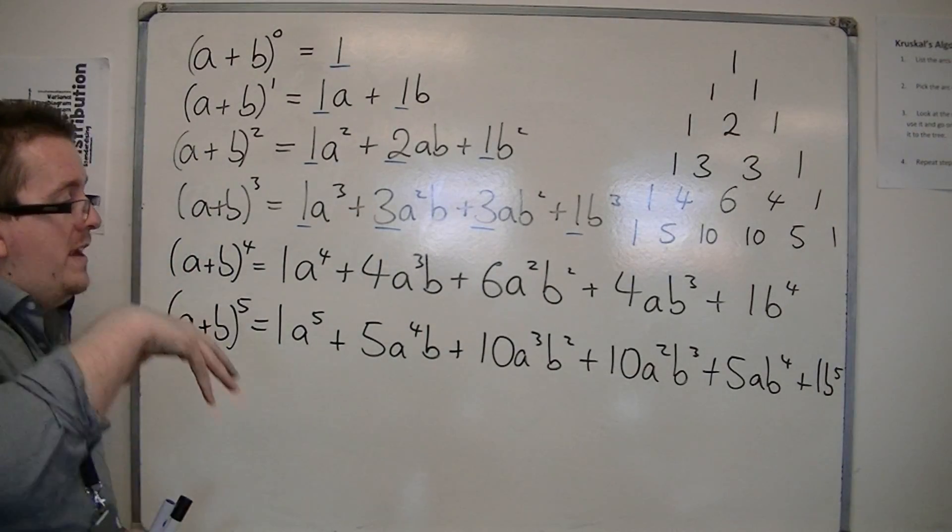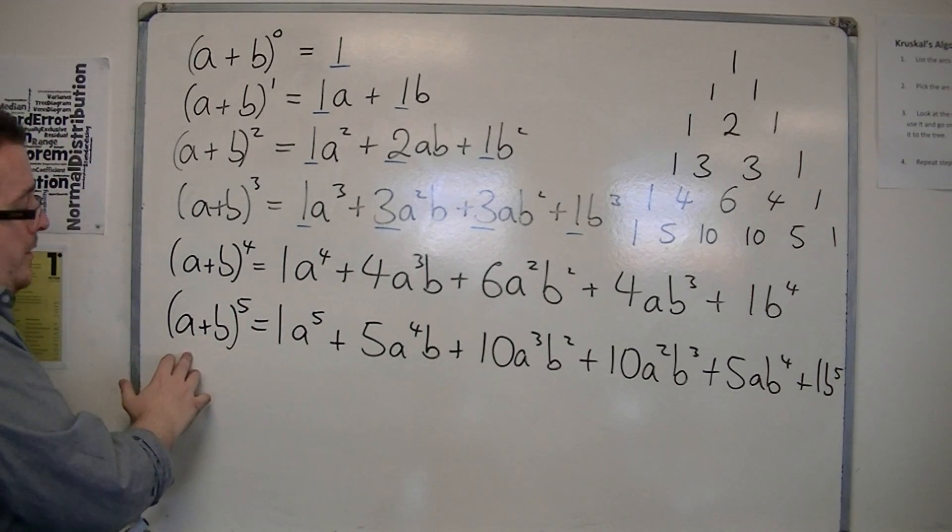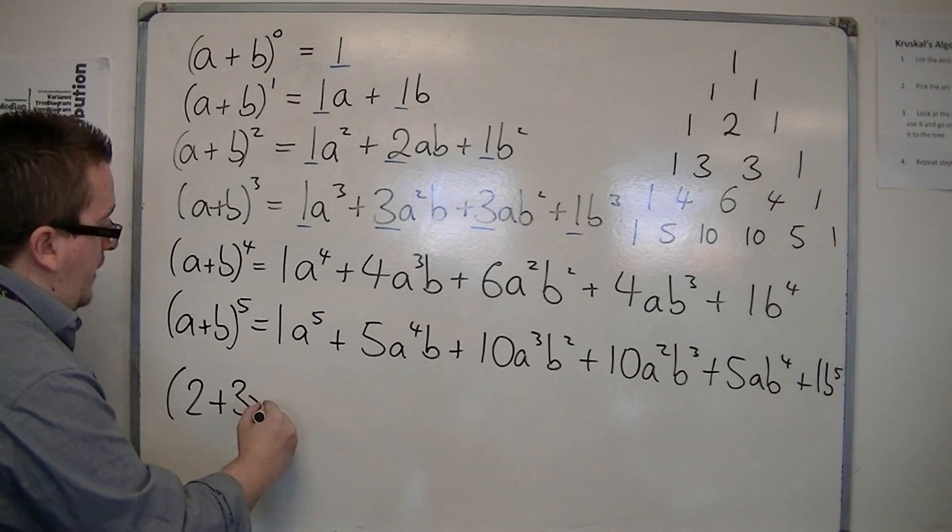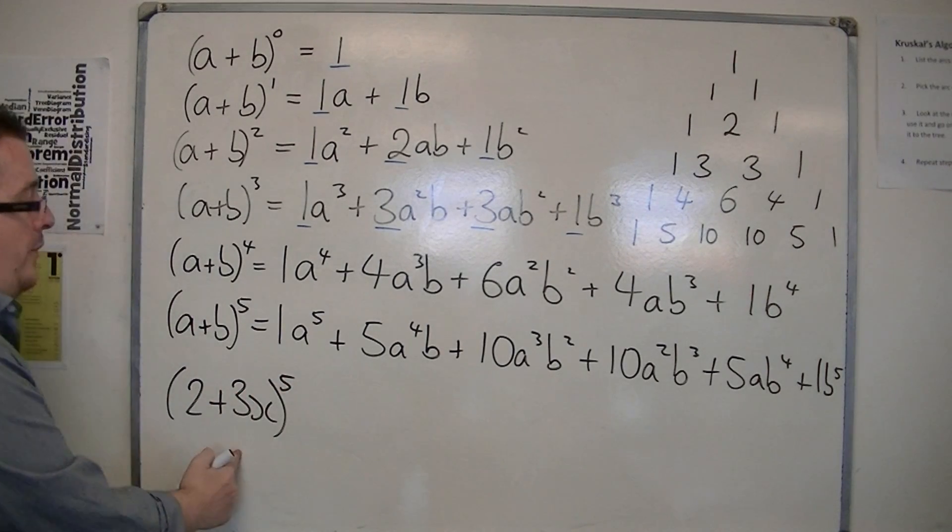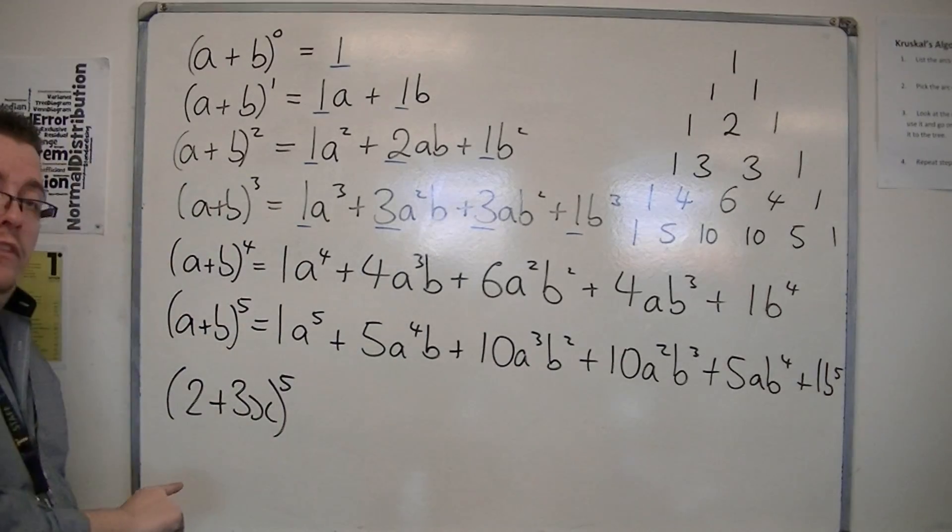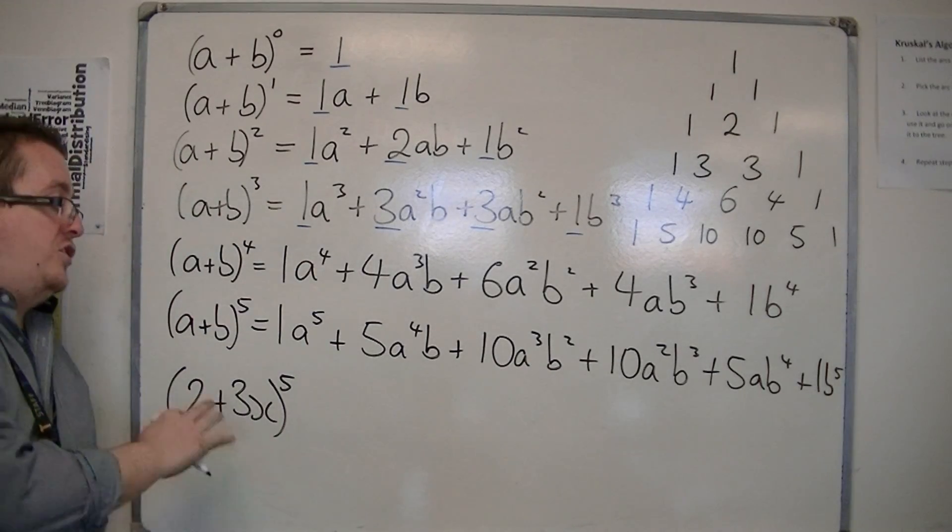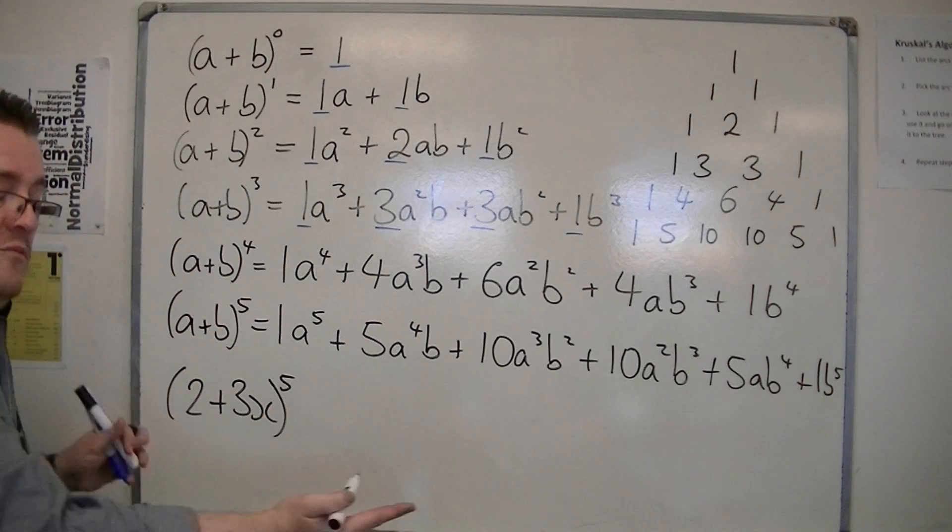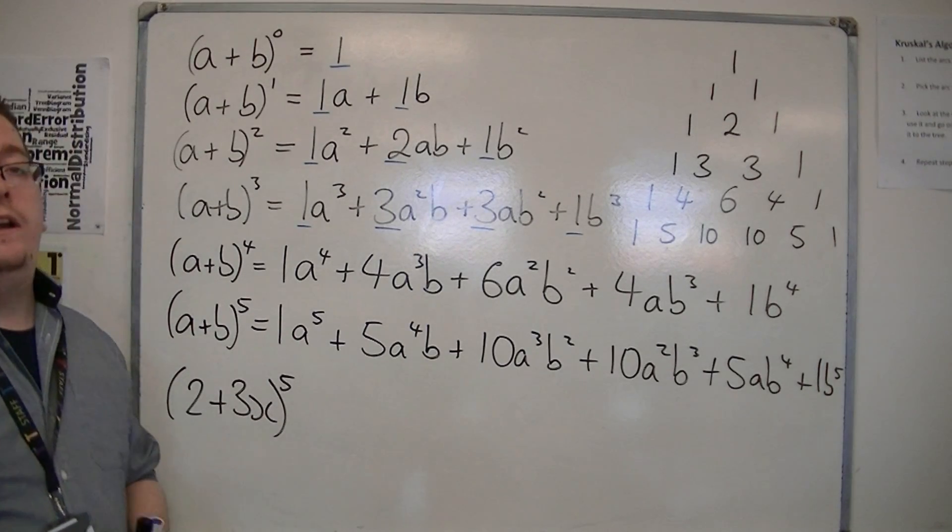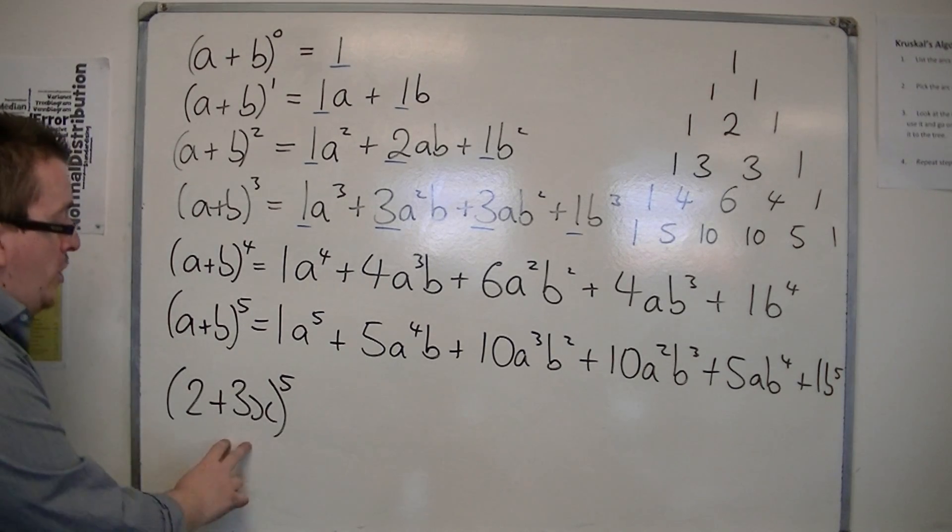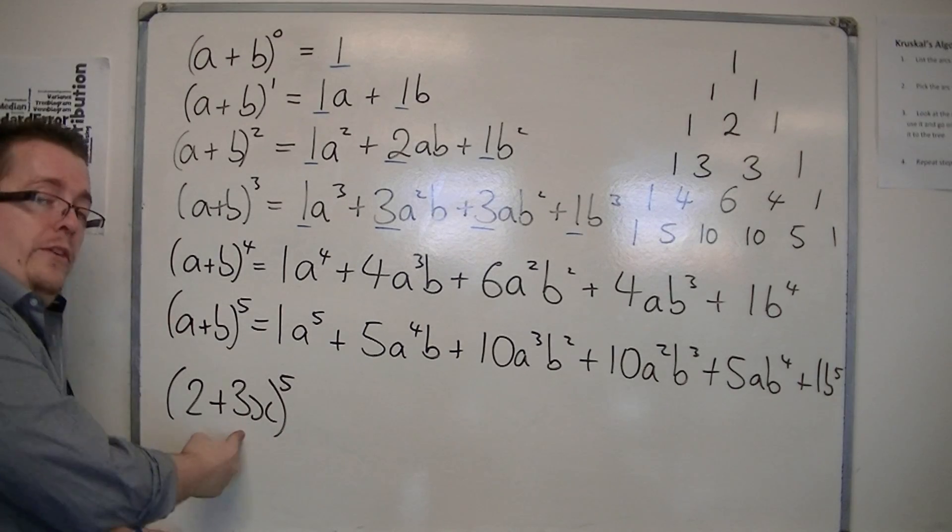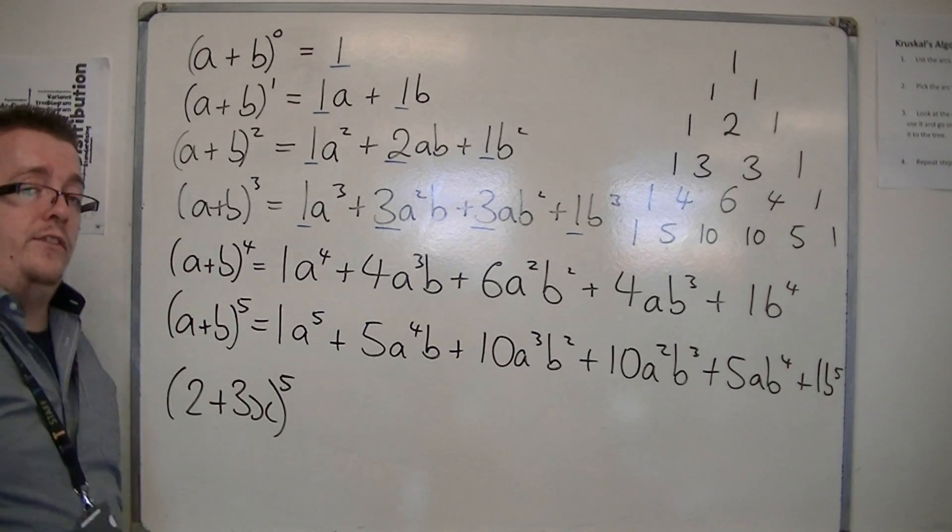And really, if I was going to expand, say, (2+3x)^5, I would use this method rather than expanding it with 5 brackets, because the likelihood of making a mistake is much higher that way. In the next video, I'm going to show you how to use this expansion to expand (2+3x)^5.